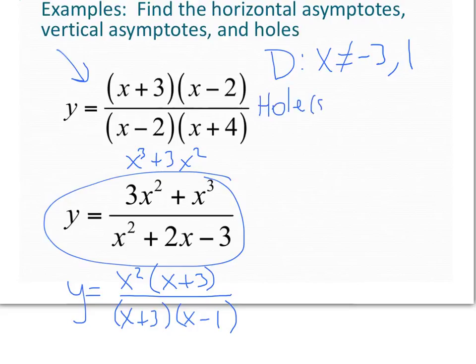Holes. We could have more than one hole, so there could be a couple holes there. Well, it's what cancels. X plus 3 cancels. When x plus 3 cancels, that means that I have a hole at x equals negative 3.